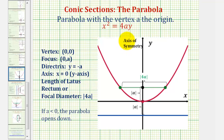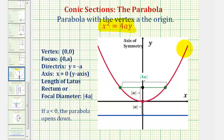If the equation of the parabola fits this form, where the x term is squared and the y term is to the first power, the parabola will always open up or down. If a is negative or less than zero, the parabola will open down. Or as pictured here, if a is positive, the parabola will open up.